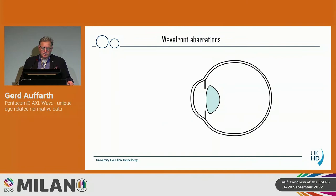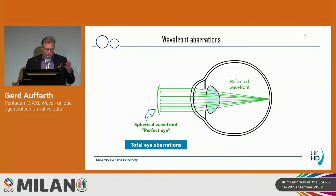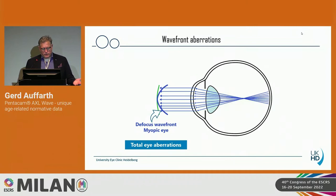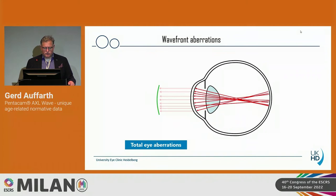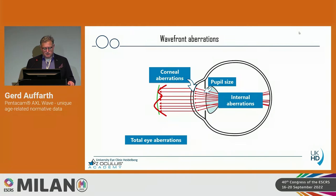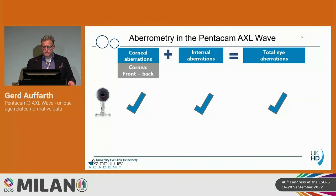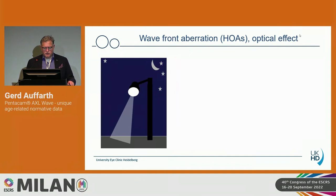Looking at wavefront aberrations: when a beam enters the eye and is reflected back, we assess the spherical wavefront. In a perfect eye we have the total eye aberrations. In a myopic eye, we have a certain defocus. The high order aberrations — the total sum — are built from the corneal aberration, influenced by pupil size and the internal aberration. Corneal aberration consists of front and back surfaces, and they are summarized in the Pentacam AXL Wave measurement of total eye aberrations.